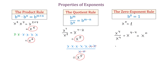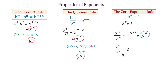Now let's write x to the fourth power over x to the fourth power one more time. We have a fraction, and in this fraction we divide a quantity by the same quantity. Then the result has to be 1, because these two quantities are the same. So on one hand, x to the fourth power over x to the fourth power is x to the zero power, but on the other hand it is 1. So then, we will write that x to the zero power equals 1.